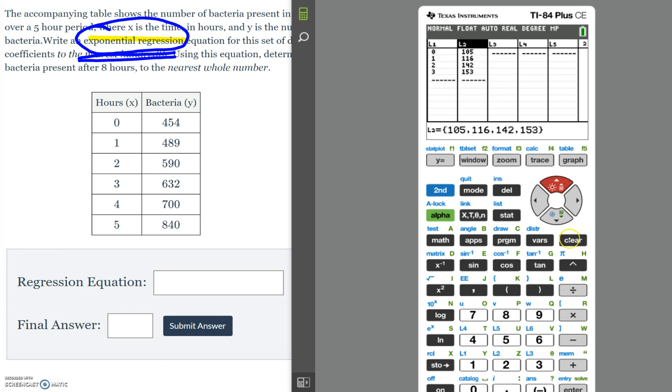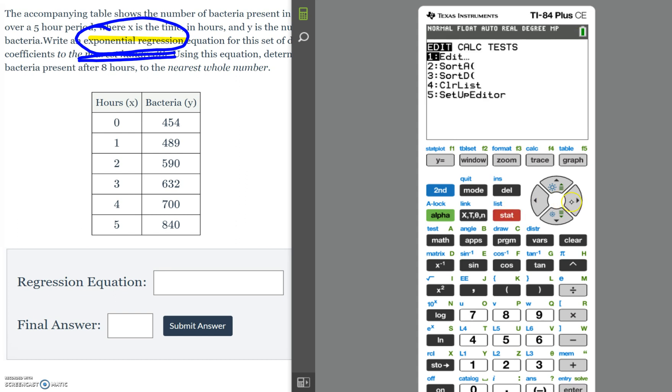So same idea. Stat, edit. We're going to clear out our list. We're going to type in all our values, so 0 through 5. Don't mind my dog playing in the background. Then the same values for y. So once we have all our values in, we're going to double check that we typed them in correctly. Now we could hit stat over to calc and 0 because it said exponential regression.